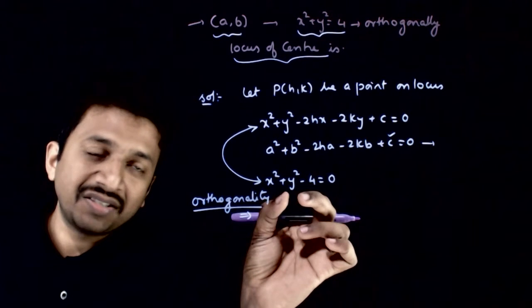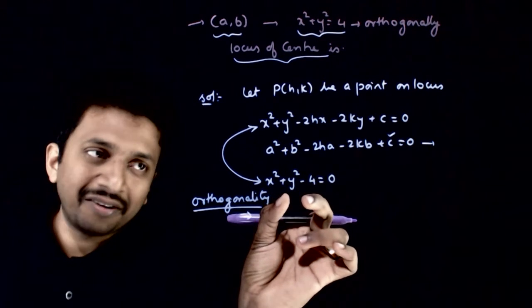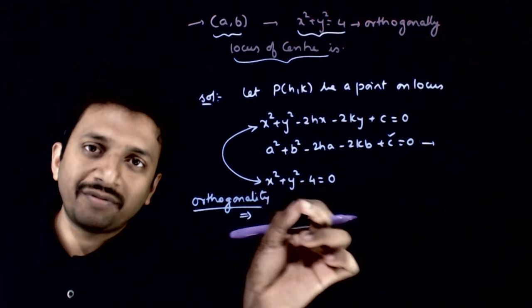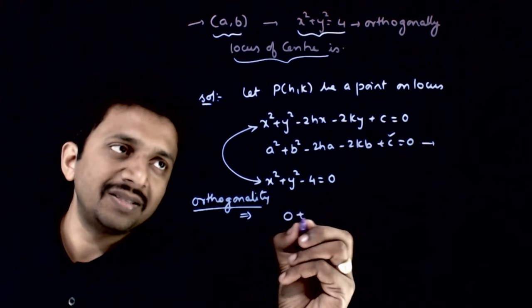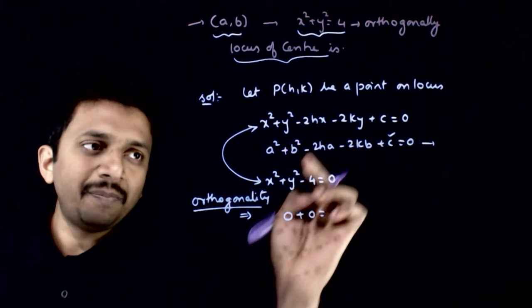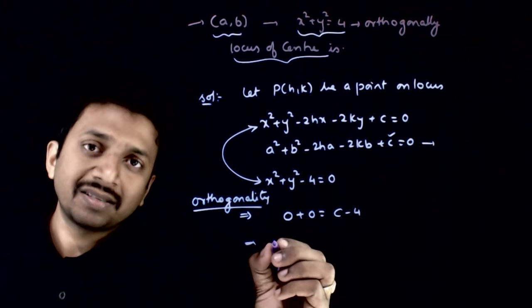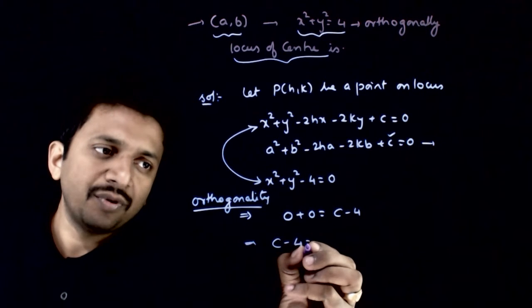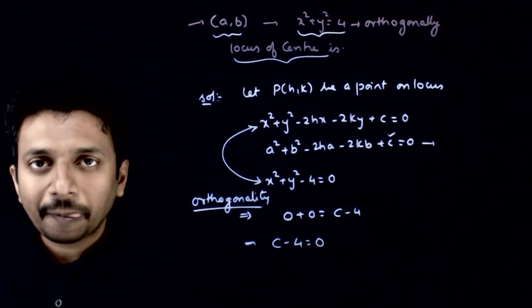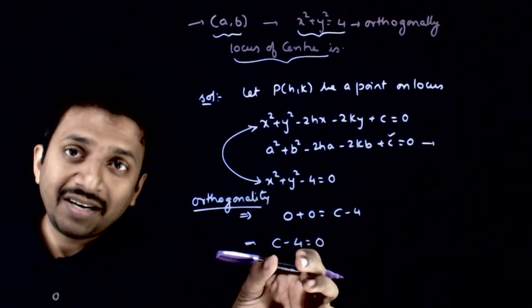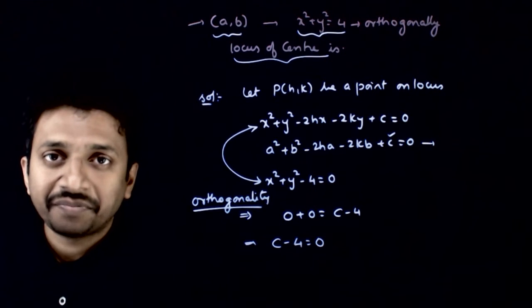c - 4 = 0. This is the condition that comes from the orthogonality condition.